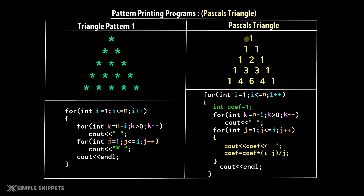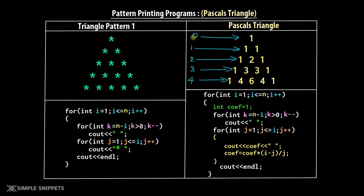This is what Pascal's Triangle looks like. We will start naming the rows from 0, then 1, 2, 3, and 4, giving us 5 rows total. I'll explain why we start naming from 0. As mentioned, this triangle gives us the coefficients of a binomial expression.